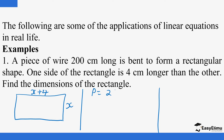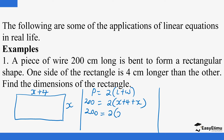Perimeter equals 2 times (length plus width) — that is for a rectangle. The perimeter is given as 200, so: 200 = 2(x + 4 + x). Opening that bracket gives us 200 = 2(2x + 4). You can see this is an equation in one unknown, which is part of what is discussed within the topic of linear equations.